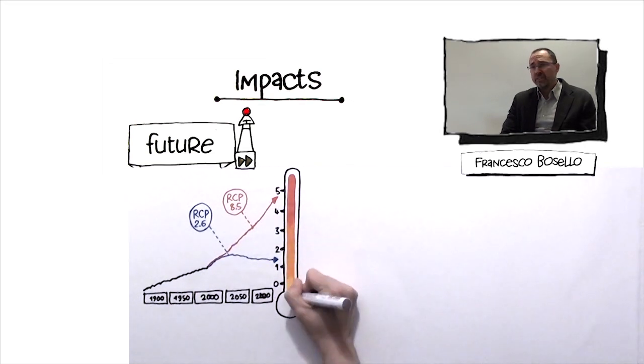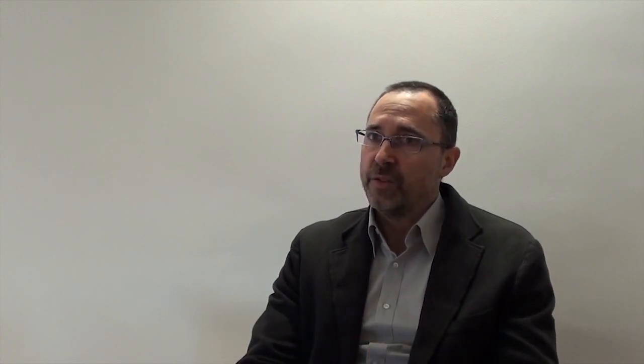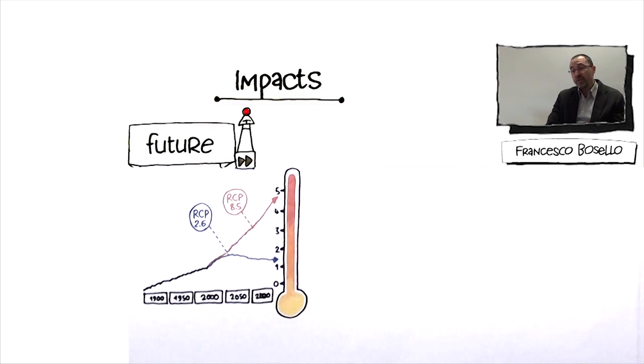What is interesting to notice first is that until 2040, basically the two temperature profiles coincide. So this is called the period of committed climate change. Whatever we are going to do today, more or less we are going to experience that temperature increase because the climate system has some inertias which are very hard and difficult to revert. But this is also the period in which we need to act immediately to decide in which of the two branches we would like to place ourselves.